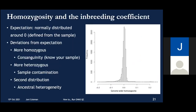The average variant homozygosity can also be applied across the genome, where this metric is sometimes referred to as the inbreeding coefficient. It's called that because high values can be caused by consanguinity — related individuals having children together — which increases the average homozygosity of the genome. There can also be other violations of expected homozygosity, so it's worth examining the distribution of values and investigating or excluding any outliers.